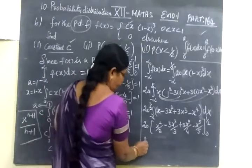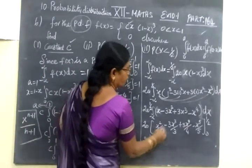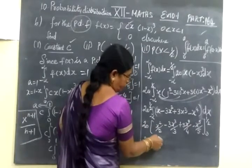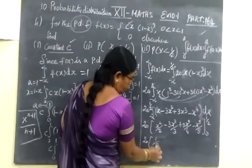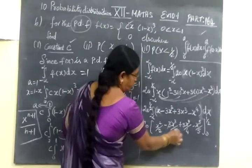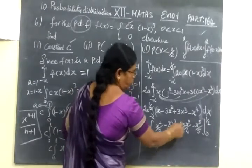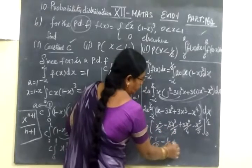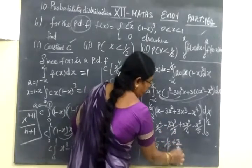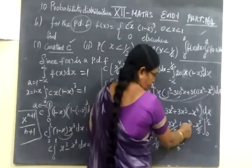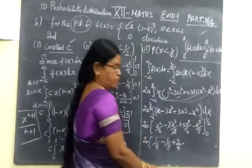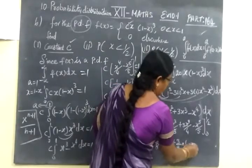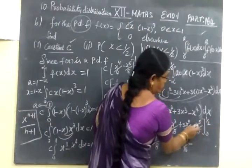Limit is 0 to half. So now you write 20 bracket. Now apply the limit upper limit. So half square is 1 by 4. Then again 1 by 8 minus 3, 3 cancels, x cube. Here we substitute half. Half whole cube is nothing but 1 by 8 plus 3 by 4 into x power 4. That means half power 4. That is 1 by 16.